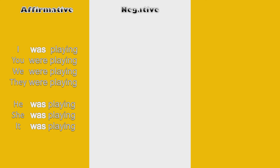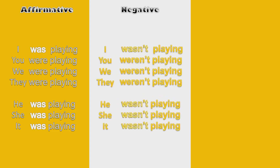Now the negative. You keep was and were with the same subjects: I wasn't playing, you weren't playing, we weren't playing, they weren't playing, he wasn't playing, she wasn't playing, and it wasn't playing. When you say verbs with -ing, don't pronounce the G at the end too strongly — it's a soft sound, so you just say playing.